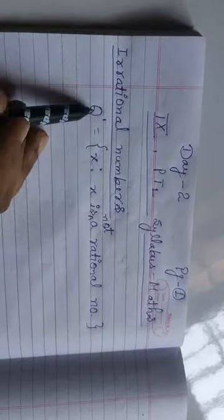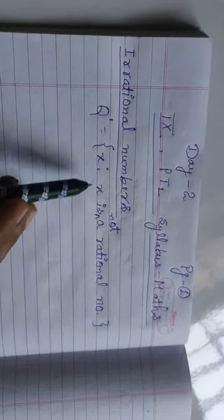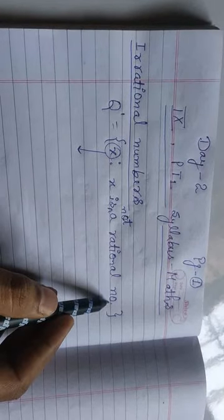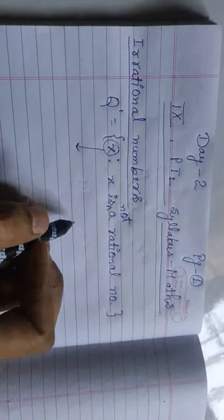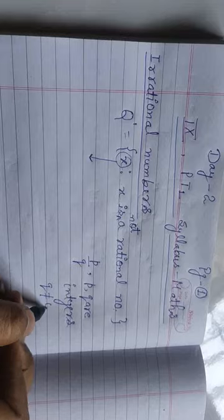Generally this set is denoted by Q prime. Q prime, that is the set of irrational numbers, is the collection of all those elements X where X is not a rational number. And when I had class in the data, what are rational numbers? A number which is in the form of P over Q where both P and Q are integers and Q is not equal to 0.